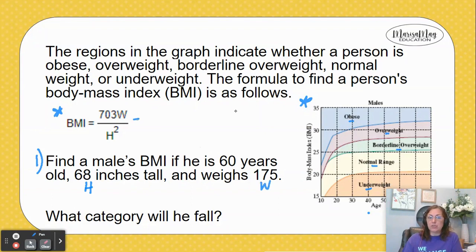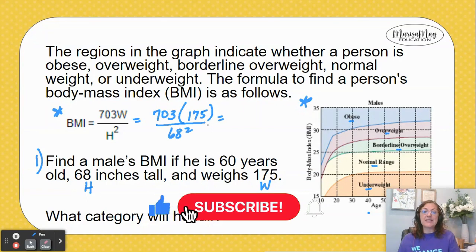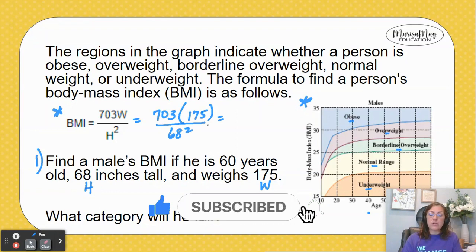So I've got 703 times the weight of 175, divided by 68 to the second power. You can do this in Desmos graphing calculator, which I have linked below for you.